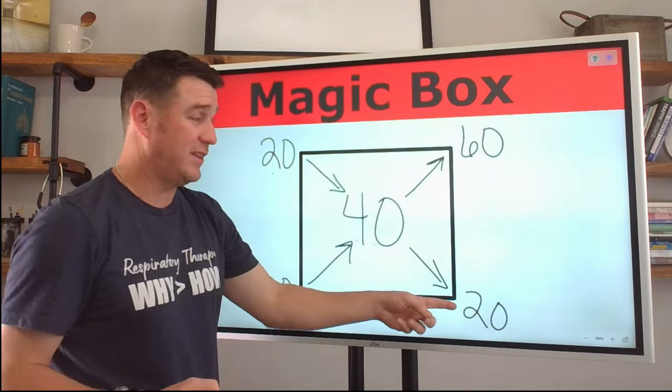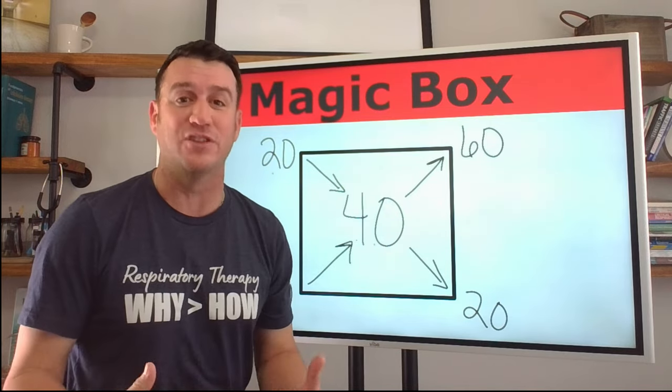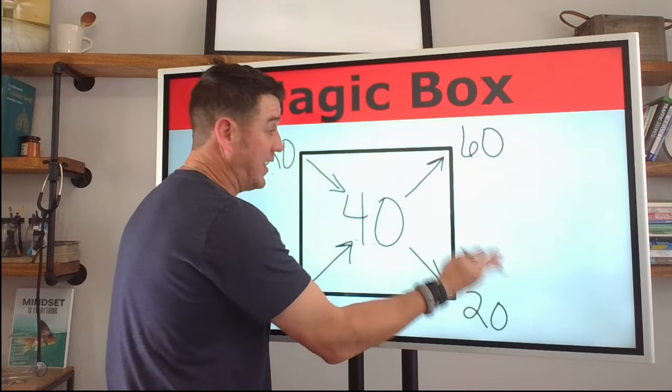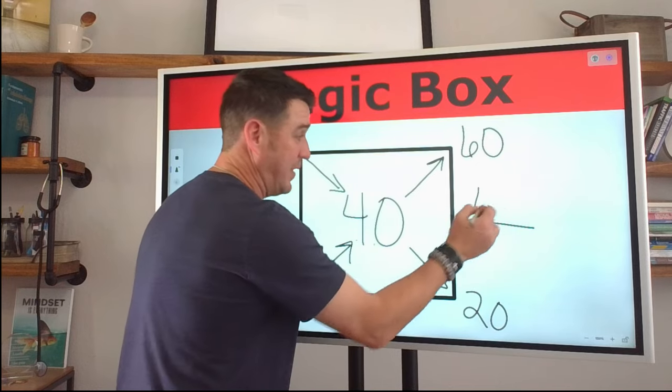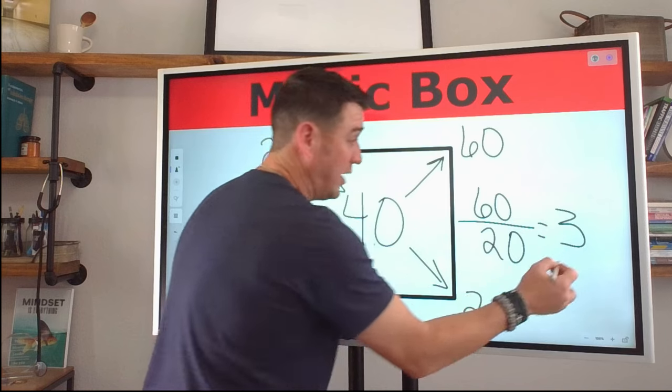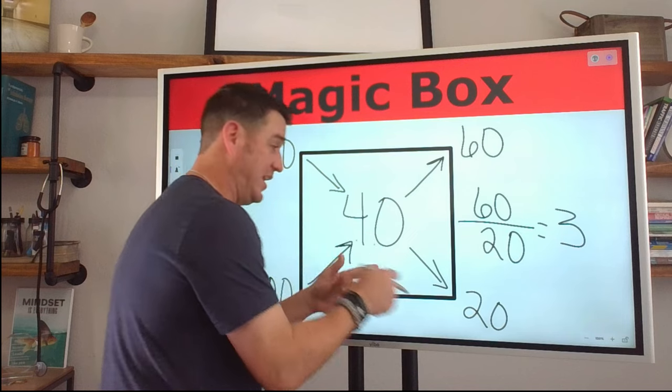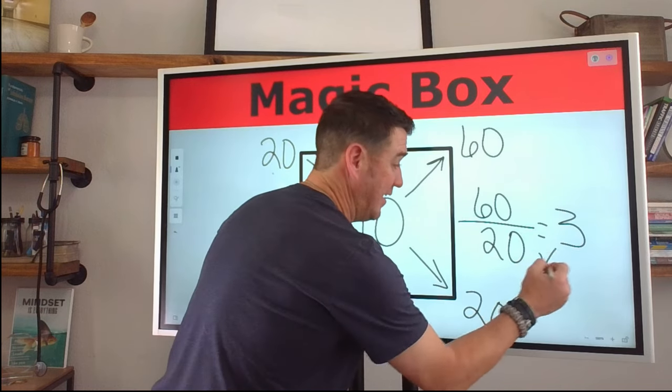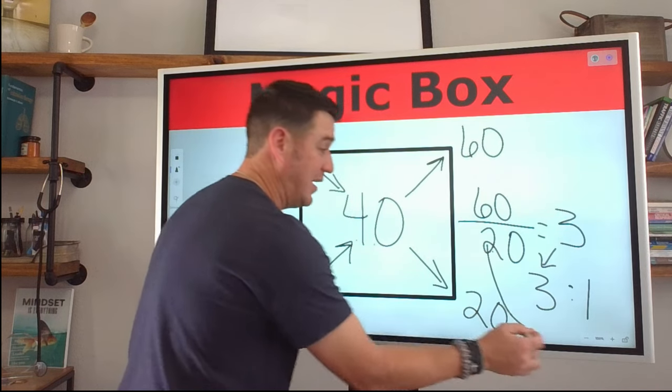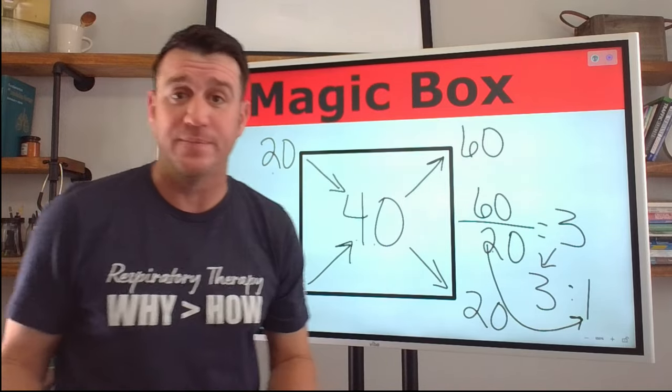Now we do the same thing here, diagonally this way, 100 minus 40 is 60. And here's what we're left with. Now you say, okay, that's not my air to oxygen ratio. It's not, but now we have the numbers we need to divide by. So now they're already in order. So now you just have to divide 60 by 20. So 60 divided by 20 equals three. And your air to oxygen ratio for 40% is three to one.